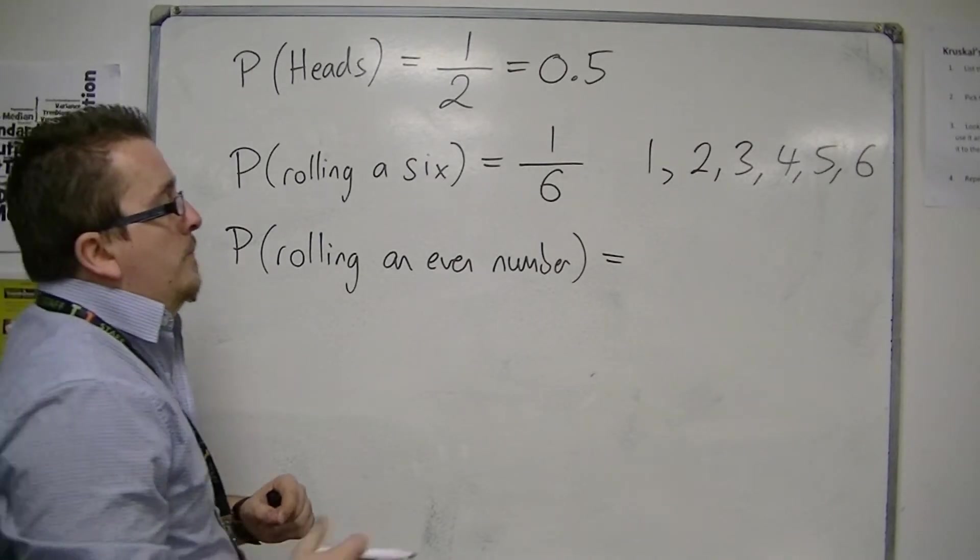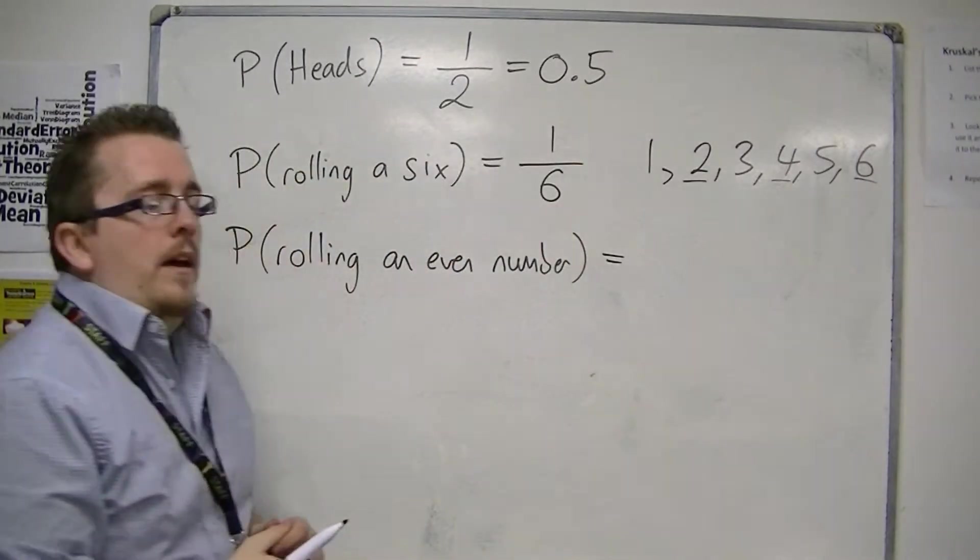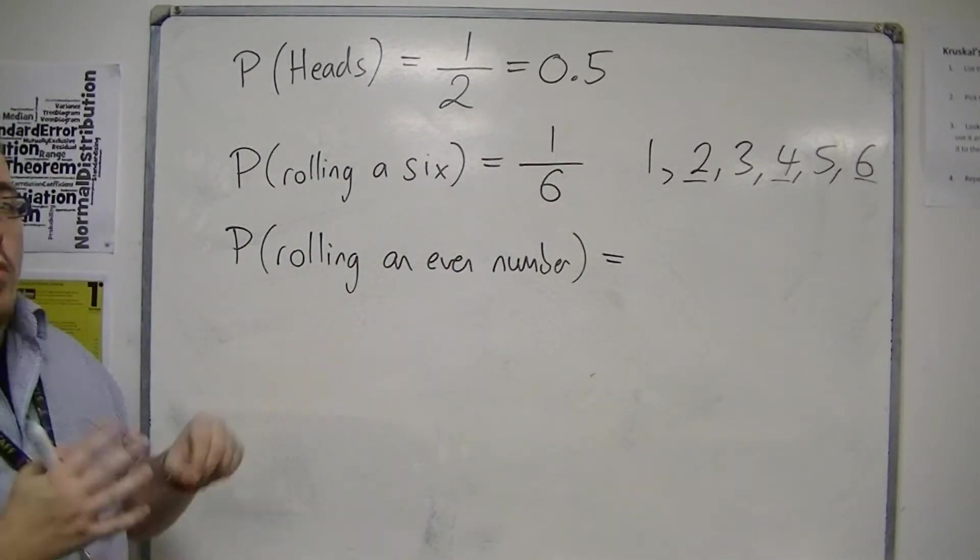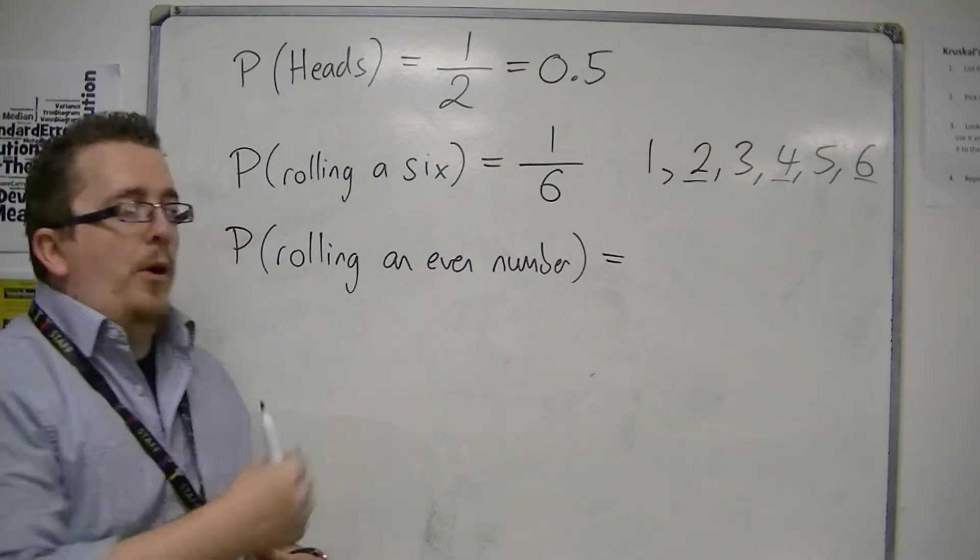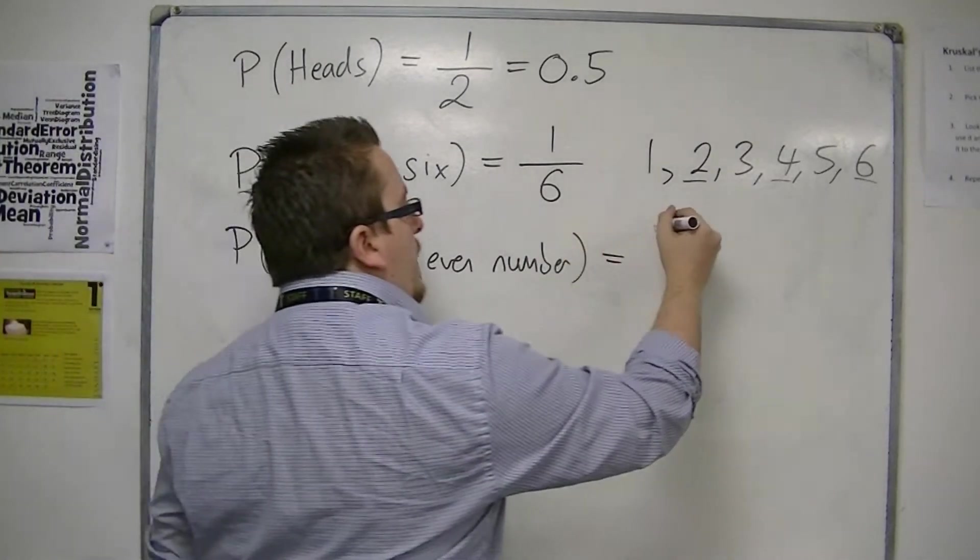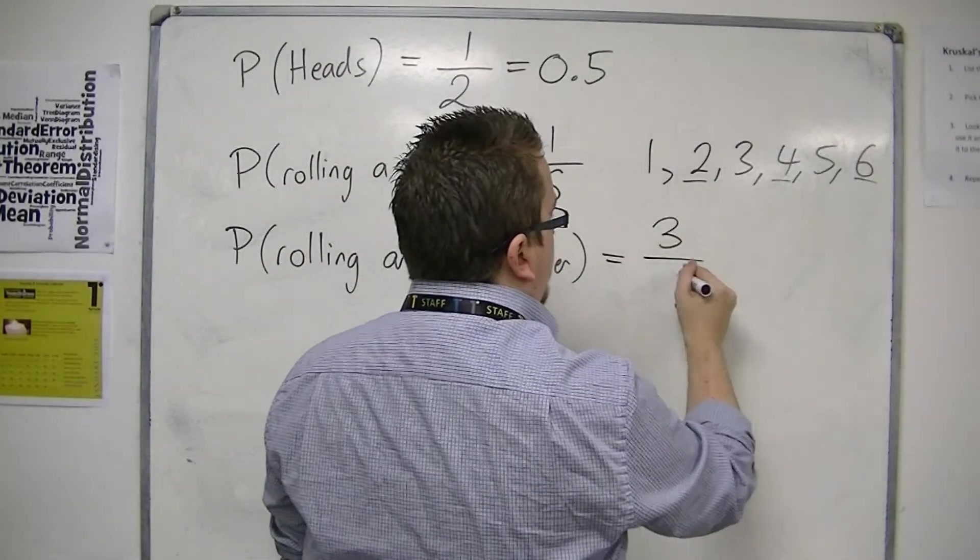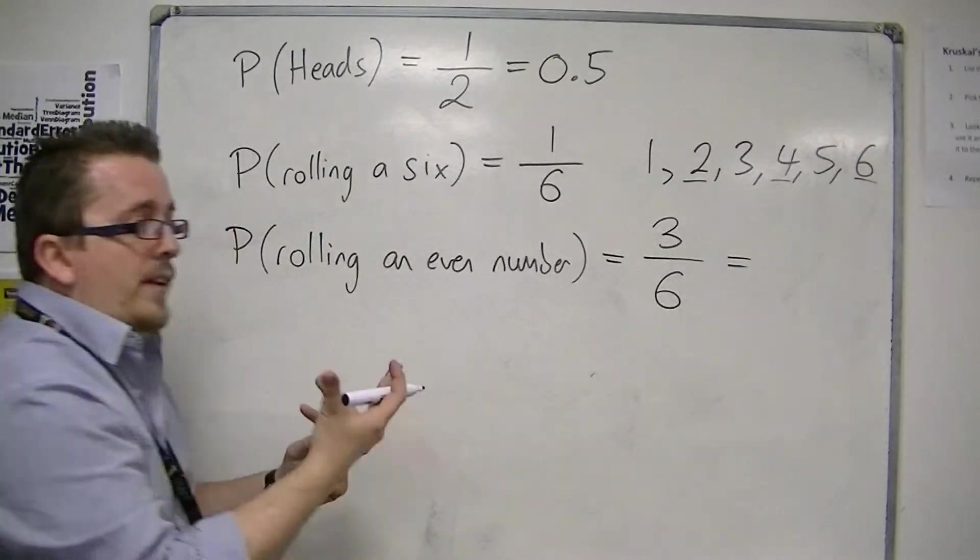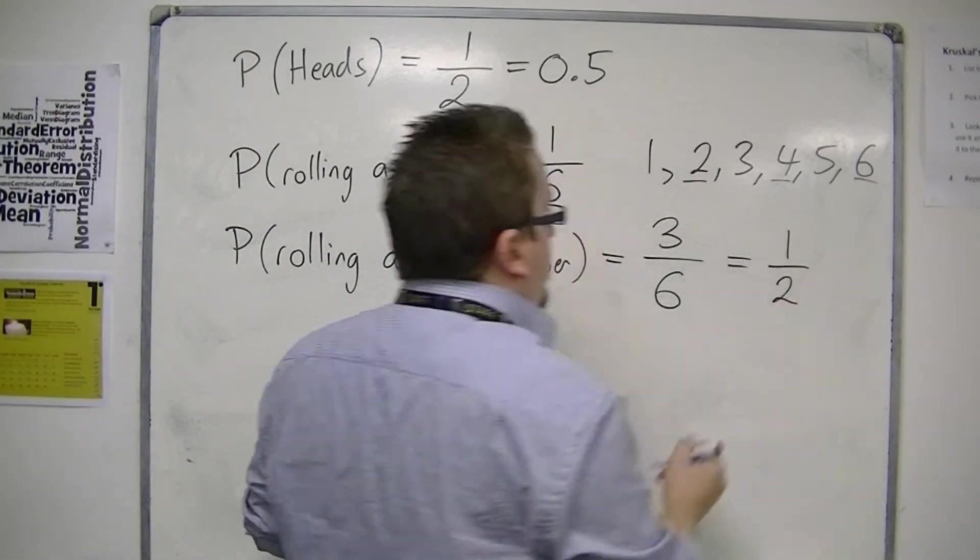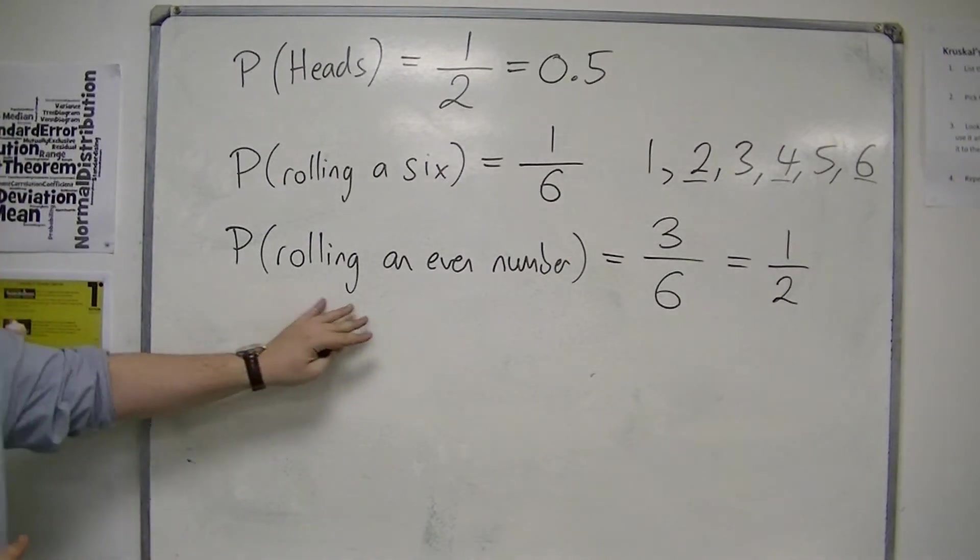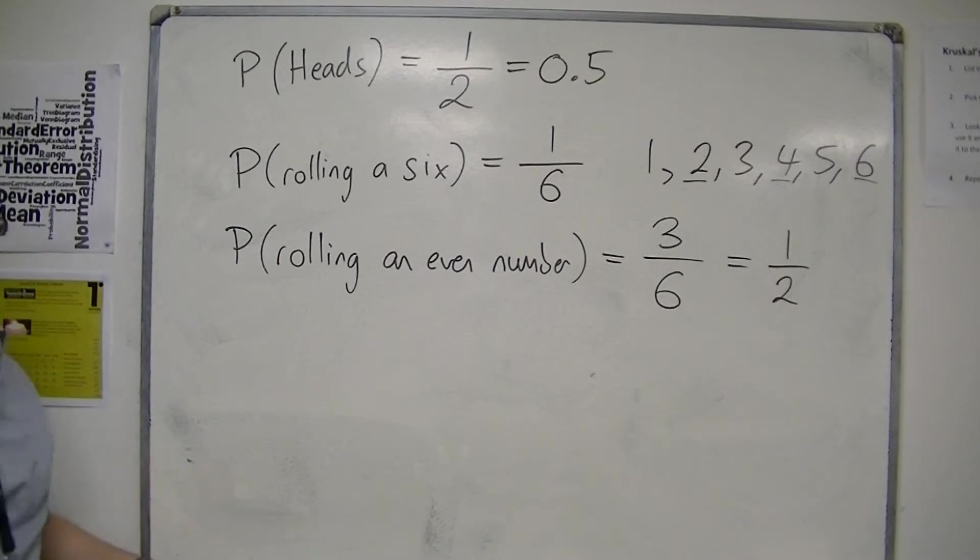So the even numbers are 2, 4, and 6. So let's say that I win if I get an even number. Well, there are 3 possible even numbers that could appear out of a possible 6, and 3/6 can be simplified down to 1 half. So you could say that the probability of rolling an even number on a fair die would be evens, or 50-50.